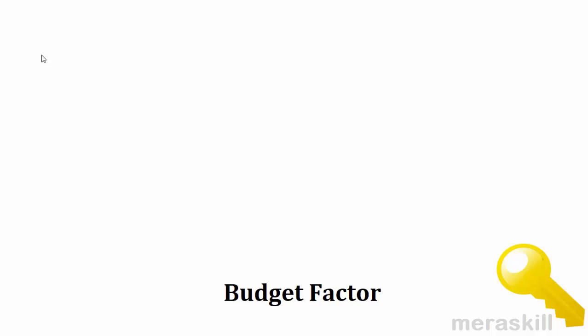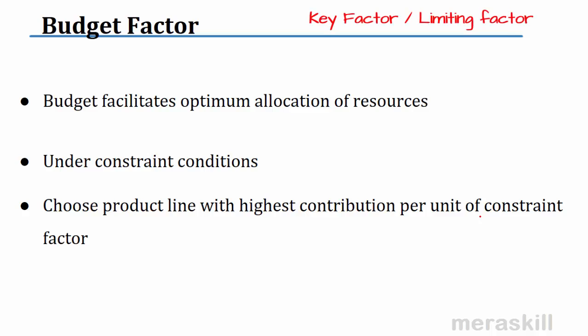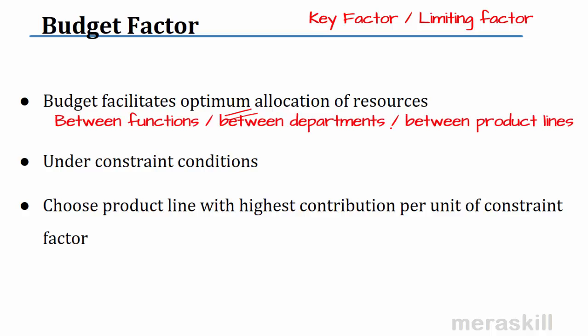Let us understand a small concept called the budget factor, also known as the key factor or limiting factor. With the help of a budget, we can make the best or optimum allocation of resources. Sometimes there are constrained conditions, such as a paucity of machine capacity, limitation of labor hours, machine hours, or raw material.